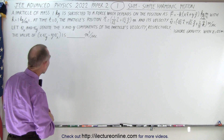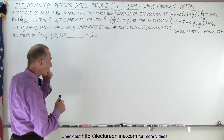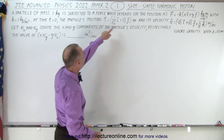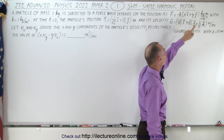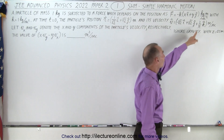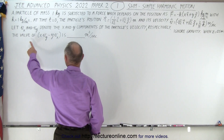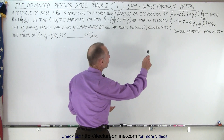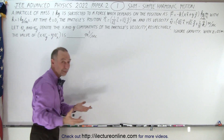A particle of mass 1 kilogram is subjected to a force which depends on the position as F equals minus kx in the i-direction and plus y in the j-direction, with k being 1 kilogram per second squared. At time equals zero, the particle's position and velocity are given. Notice there's no force in the z-direction, but it does have a velocity in the z-direction — zero position in z, and 2 over pi meters per second velocity, so that must be a constant velocity. Find the value of x times v-sub-y minus y times v-sub-x, and we're supposed to come up with a number, presumably an integer.